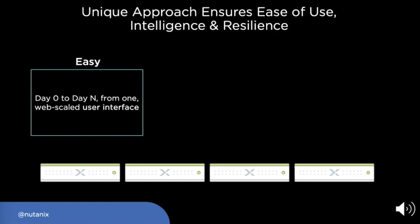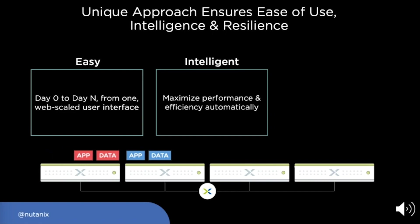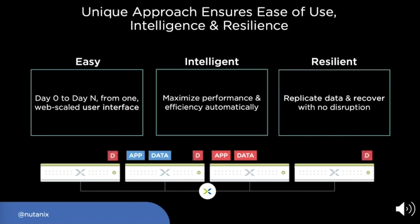This cloud-like platform has to be easy to manage from day zero to day N, all from one single user interface — just like the public cloud. It should also be intelligent, placing applications alongside the data they rely upon to increase efficiency and performance, and when there's resource contention in a specific node it should migrate the application and data to nodes with more resources. Thirdly, it has to be resilient, replicating data distributed across nodes in the cluster so that in the event of data loss it can quickly recreate that data without choking the network or impacting application performance.